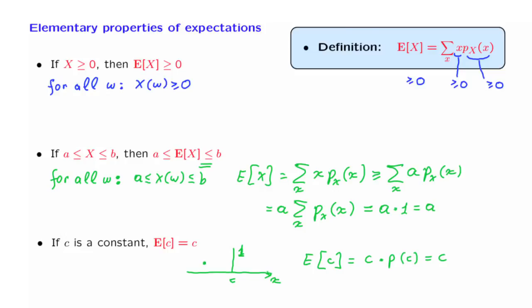Now, intuitively, of course, it's certainly clear what this is saying, that if a certain quantity is always equal to c, then on the average, it will also be equal to c.